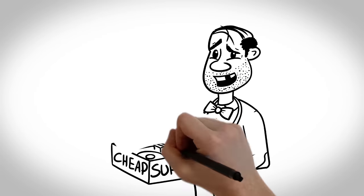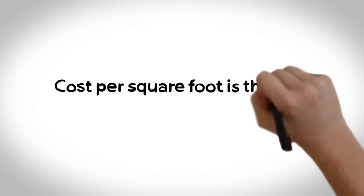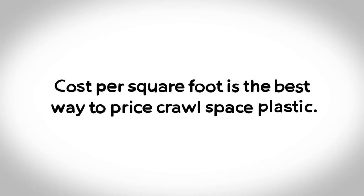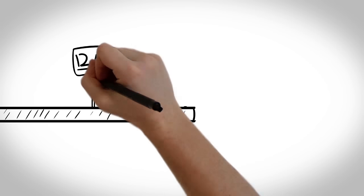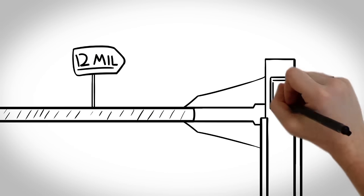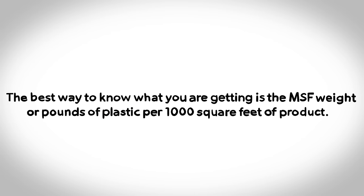This myth was started and is still repeated by inexperienced companies trying to sell their products. Cost per square foot is the best way to price crawl space plastic. False. There are companies on the internet that sell 12 mil crawl space plastic for a cheap square foot price, but it's actually 8 mil plastic. The best way to know what you are getting is the MSF weight or pounds of plastic per thousand square feet of product.